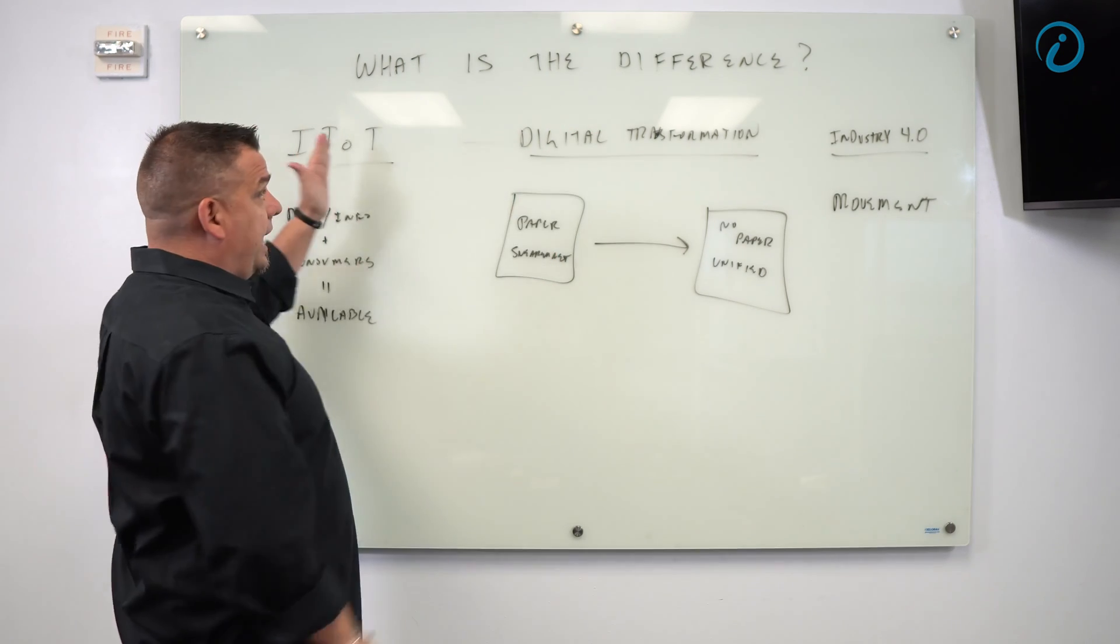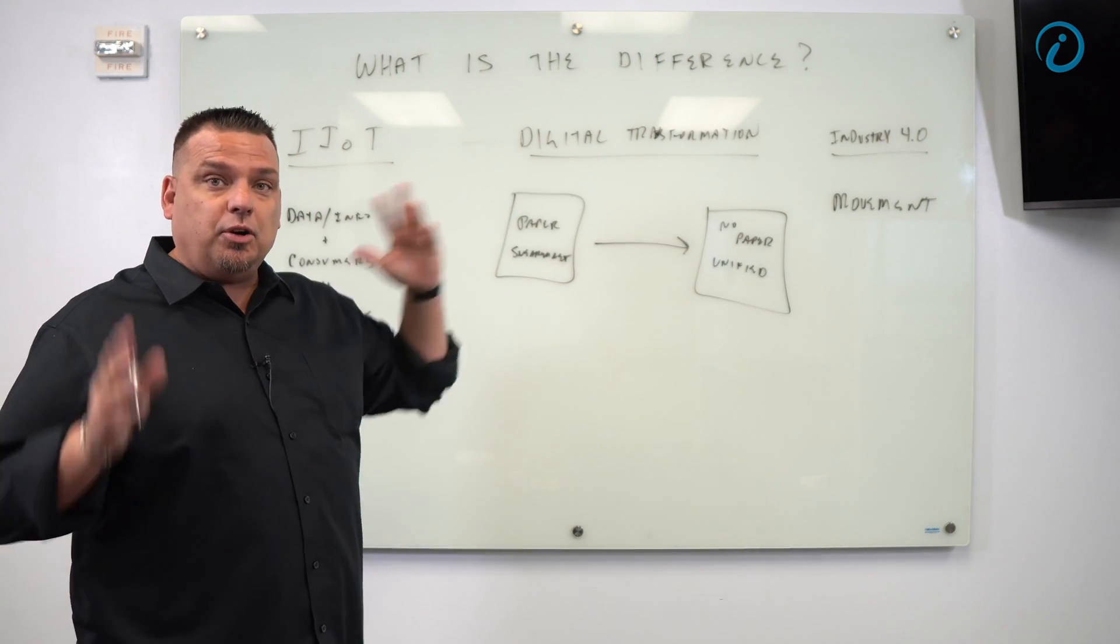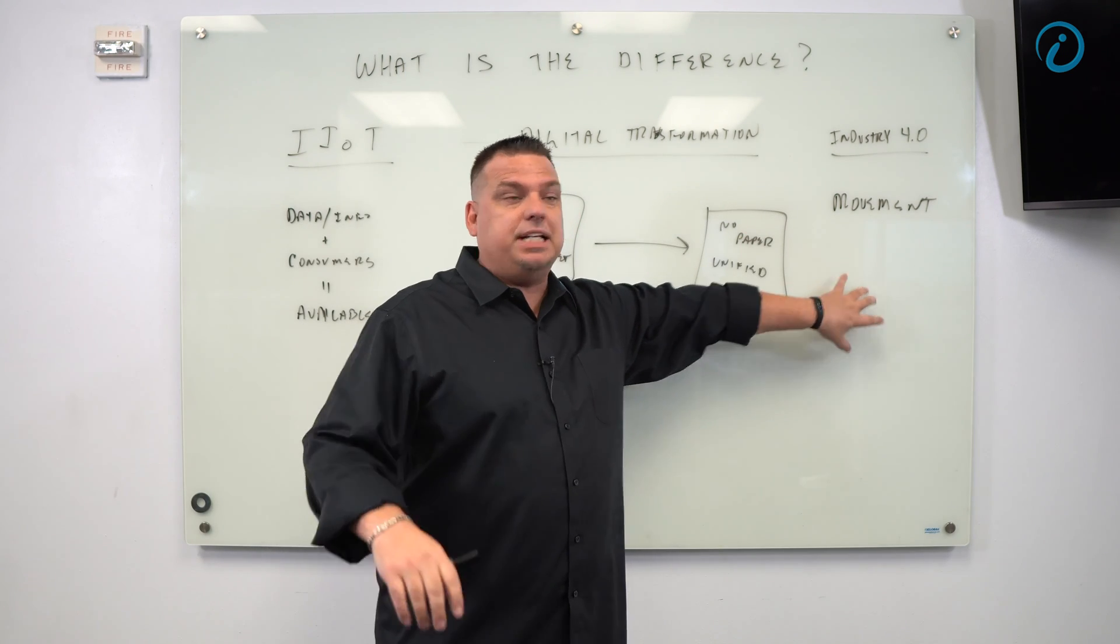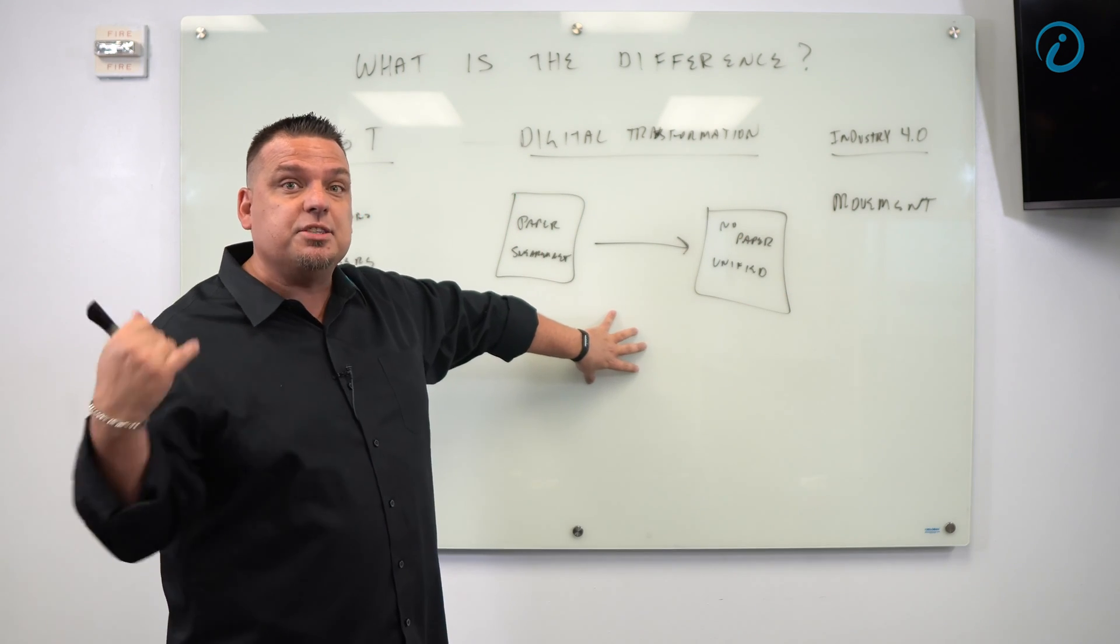What is the difference between IIoT, Digital Transformation, and Industry 4.0? There you have it. Industry 4.0 is the movement, the place of time. Digital transformation is the process. The Industrial Internet of Things is the result.